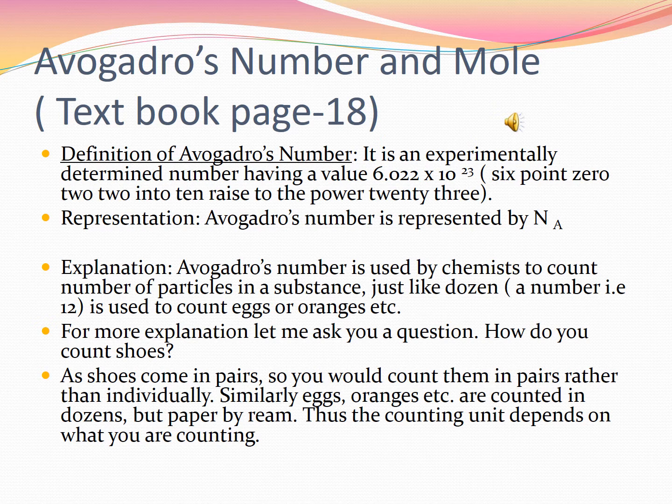Avogadro's number is used by chemists to count the number of particles in a substance, just like a dozen is used to count eggs or oranges. For example, shoes come in pairs so you count them in pairs rather than individually. Similarly, eggs and oranges are counted in dozens, but paper by ream. Thus the counting unit depends on what you are counting.